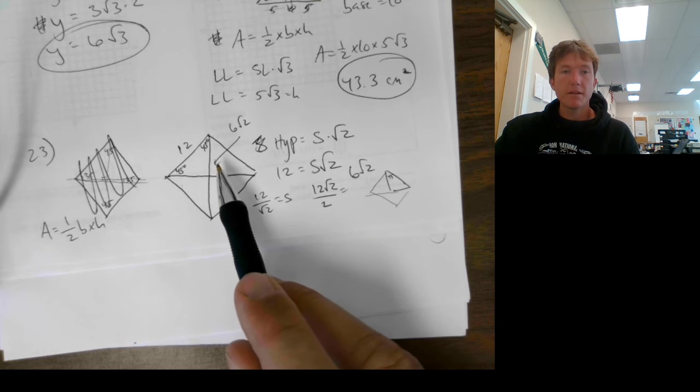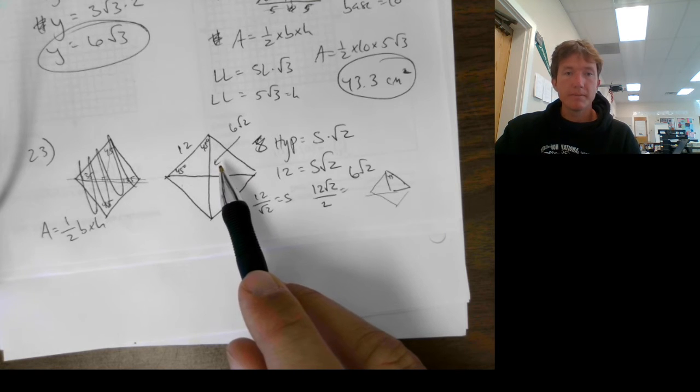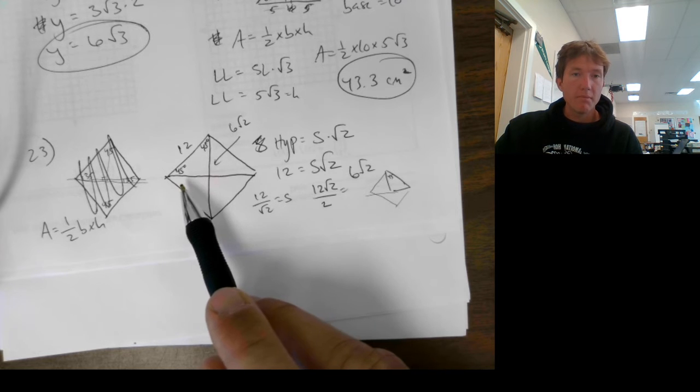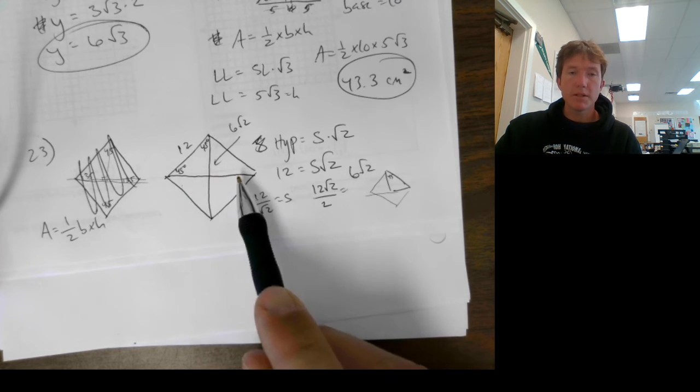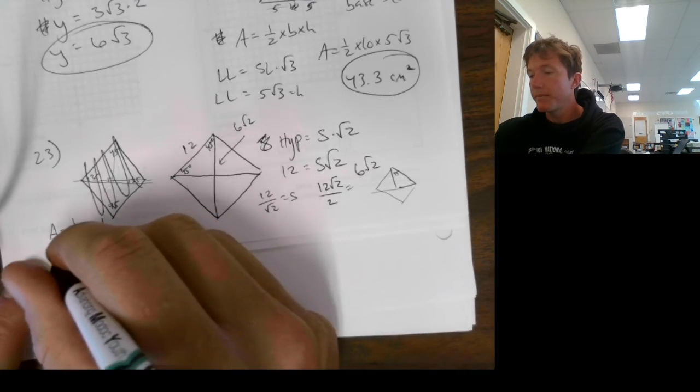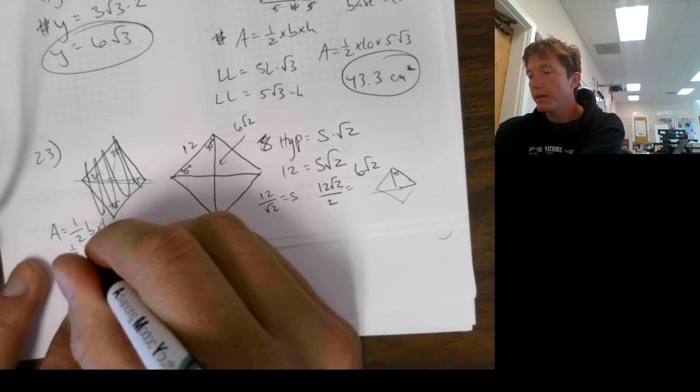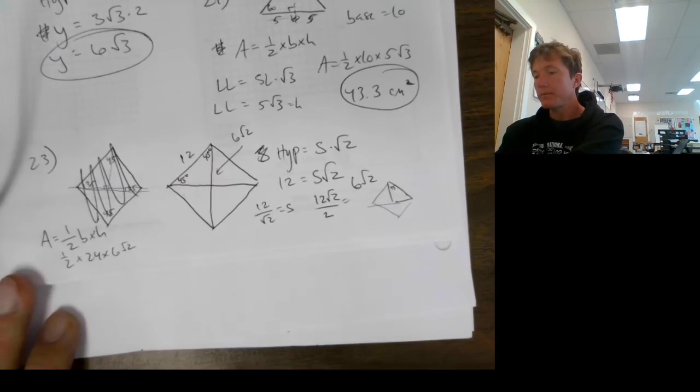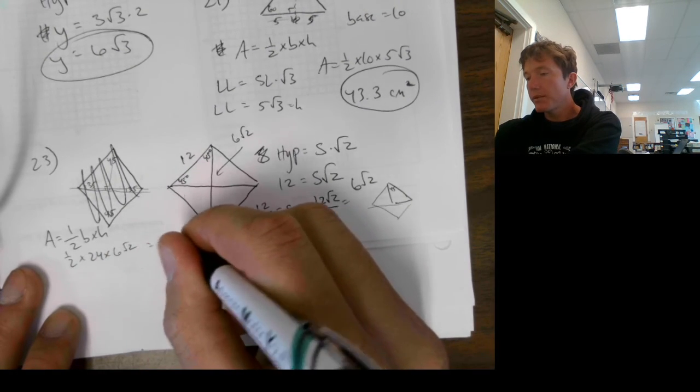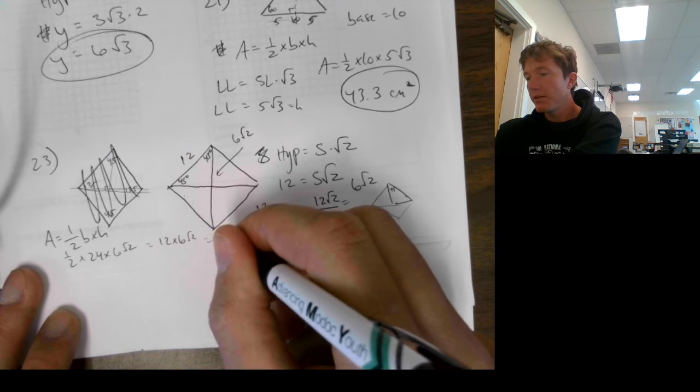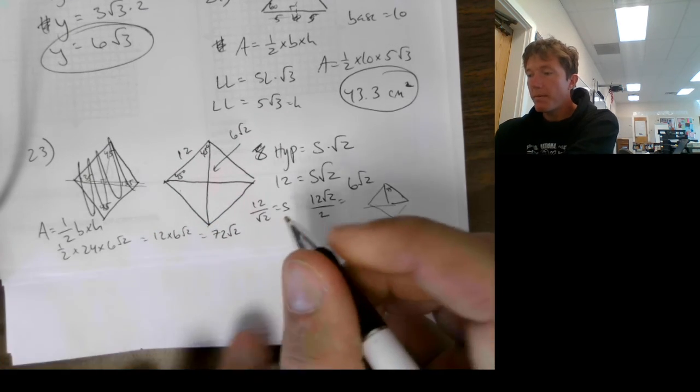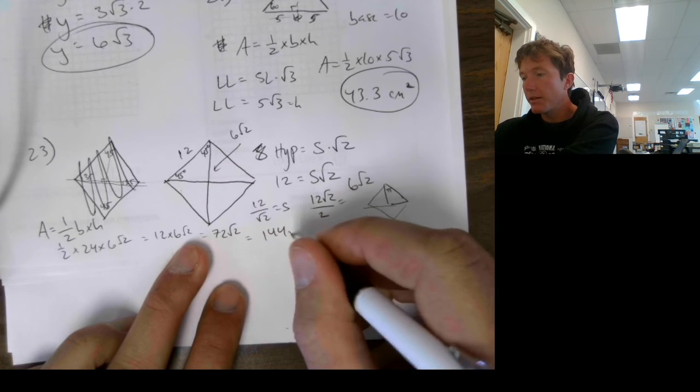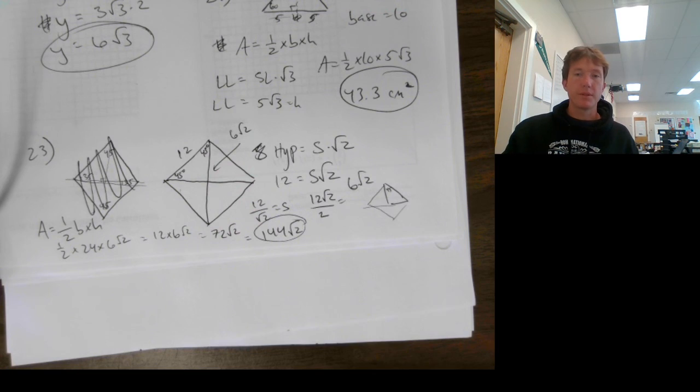So this height here is 6 root 2. My base is 12 plus 12, so that's 24. So that's one-half times 24 times my height, which is 6 root 2, which equals 12 times 6 root 2, which is 72 root 2. And then we have two of those. So my area is 144 root 2.